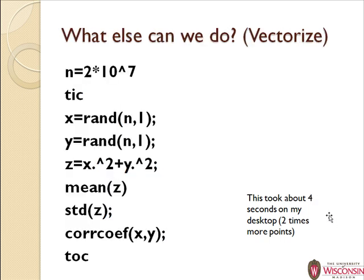There's still more you can do — you can vectorize things and get rid of the loop altogether. I set the number of points I want and start the timer. Now instead of going through a loop and calculating one value of x each time, I calculate them all at once. The command rand(n,1) gives me an n-by-1 vector filled with random numbers in one call. MATLAB has set up these routines to do that quickly, so it's faster than a loop and lets you avoid the loop altogether.